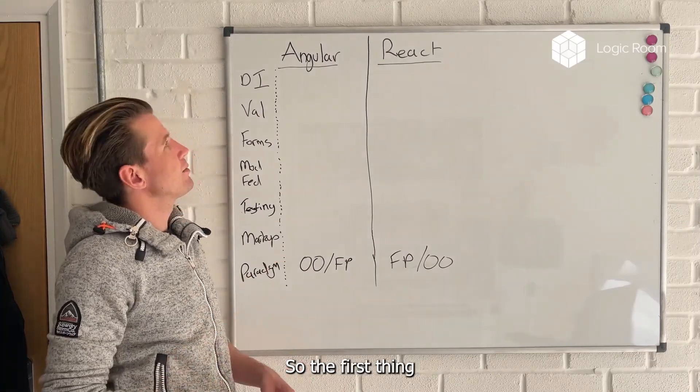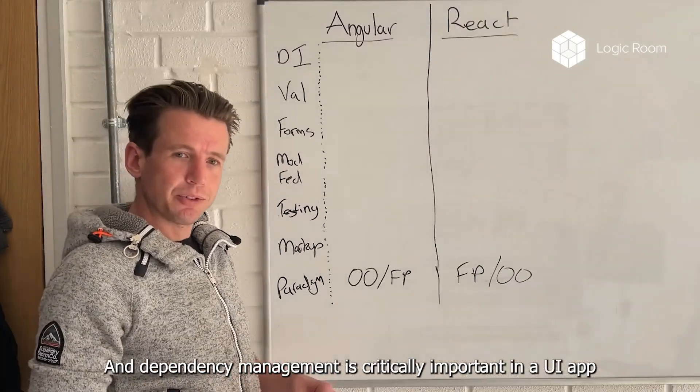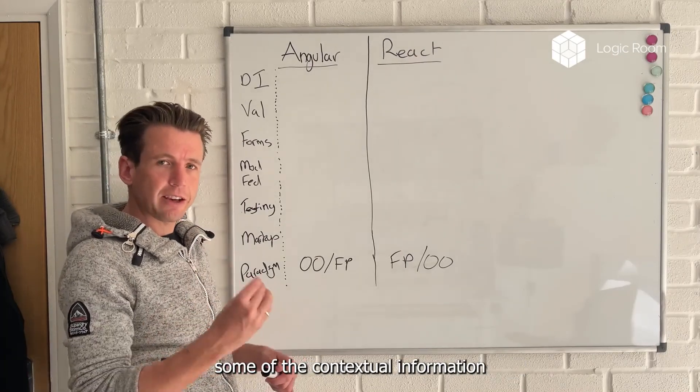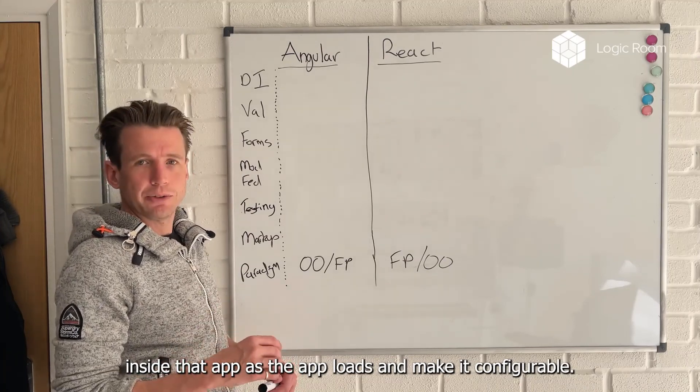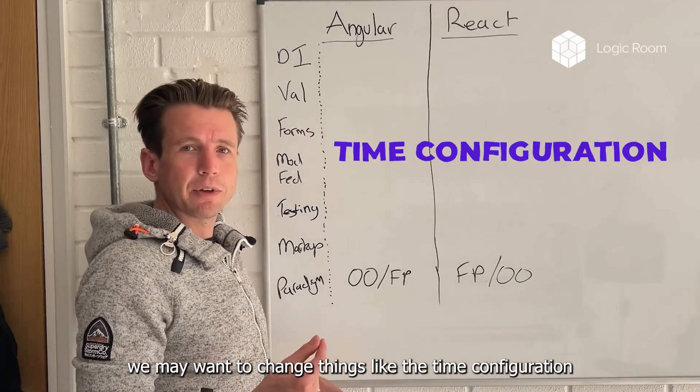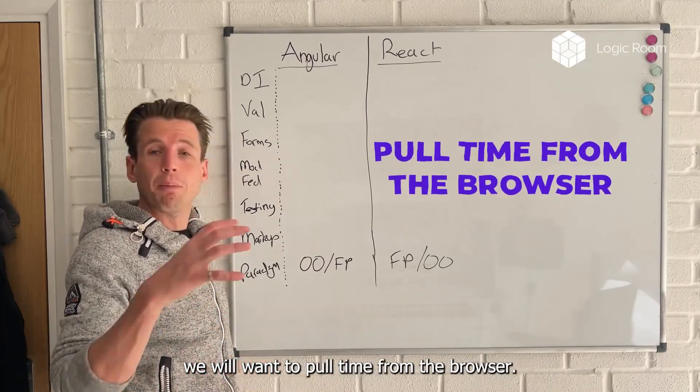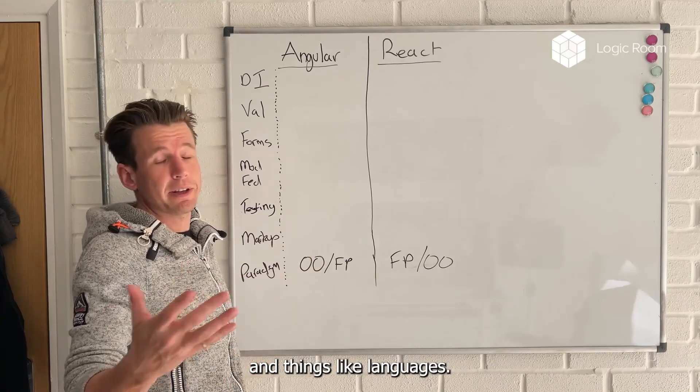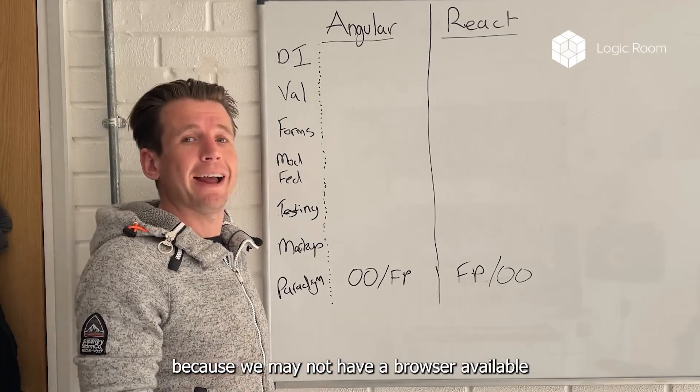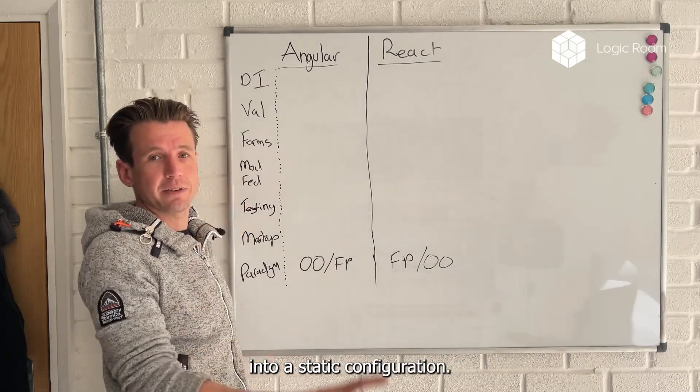The first thing we should talk about is dependency management. Dependency management is critically important in a UI app because it allows you to change some of the contextual information inside that app as it loads and make it configurable. For example, we may want to change things like the time configuration because when we run our UI app, we will want to pull time from the browser. But when we run it in a test context, we don't want to pull time from the browser because we may not have a browser available when we run the test.